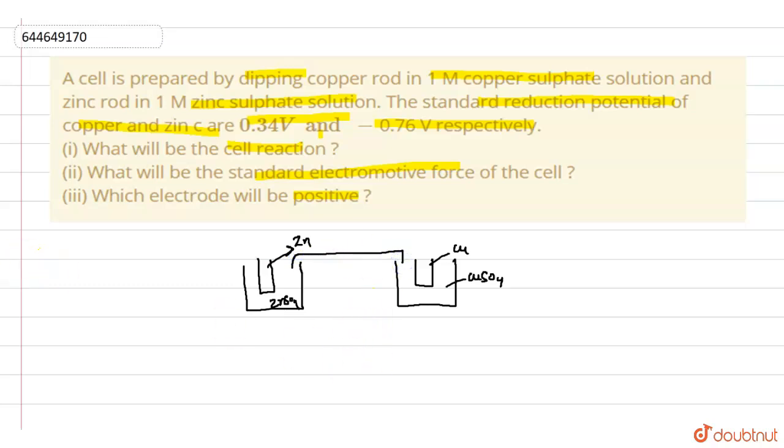The reduction potential for copper is given as 0.34 volt, and reduction potential for zinc is given as minus 0.76. Always, always remember: